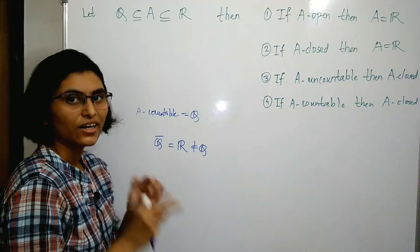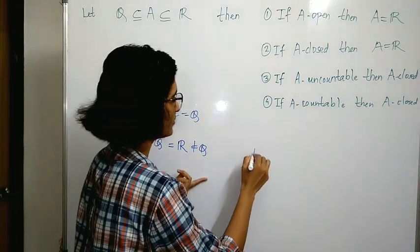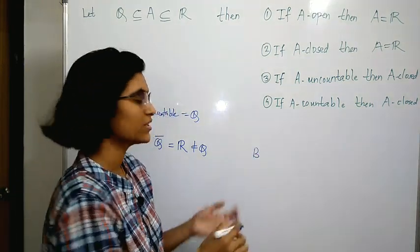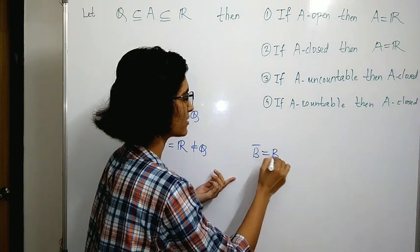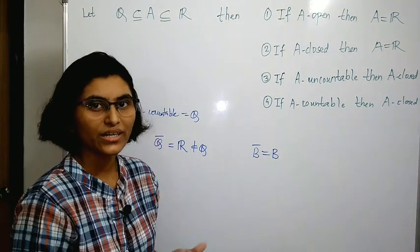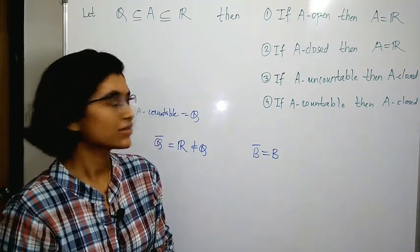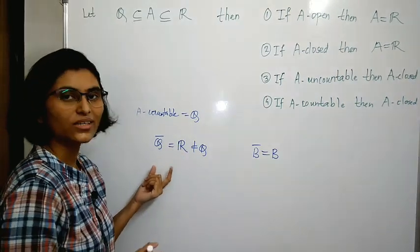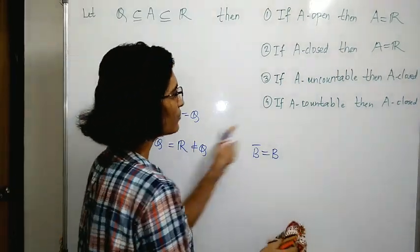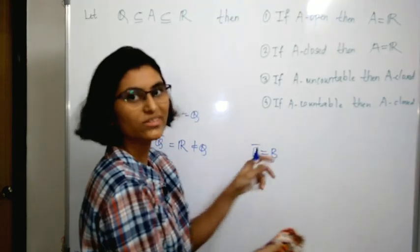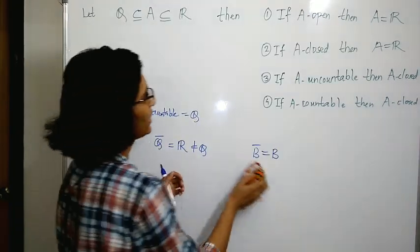The closure of Q equals ℝ, which is not equal to Q. We know that a set B is closed if its closure equals itself, or equivalently if B contains all its limit points. Since the closure of Q is not equal to Q, this is not the case here. So if A is countable then A is closed is not true — we have a counterexample.